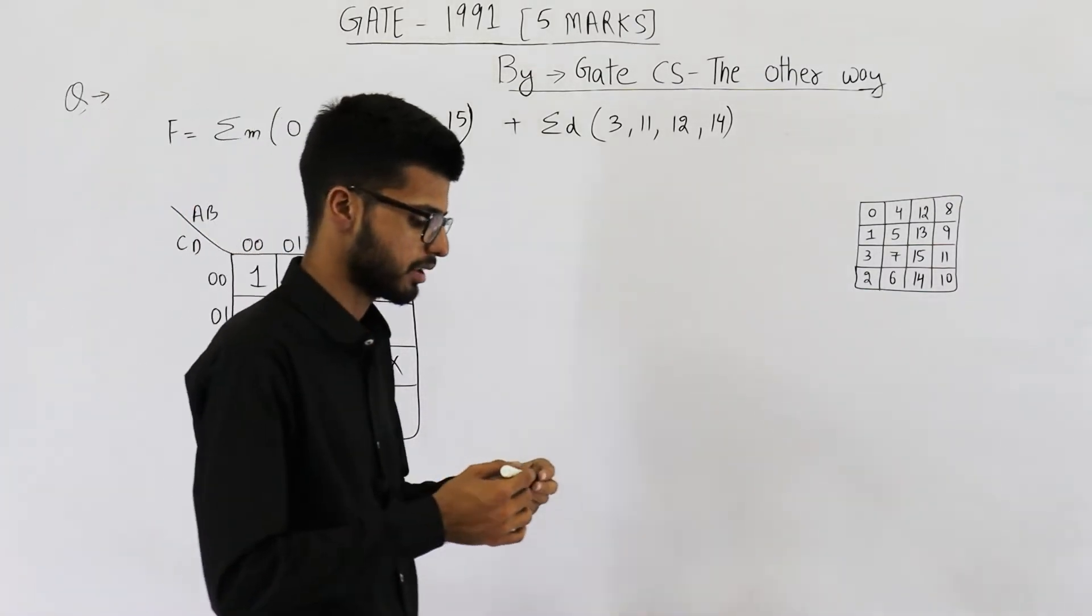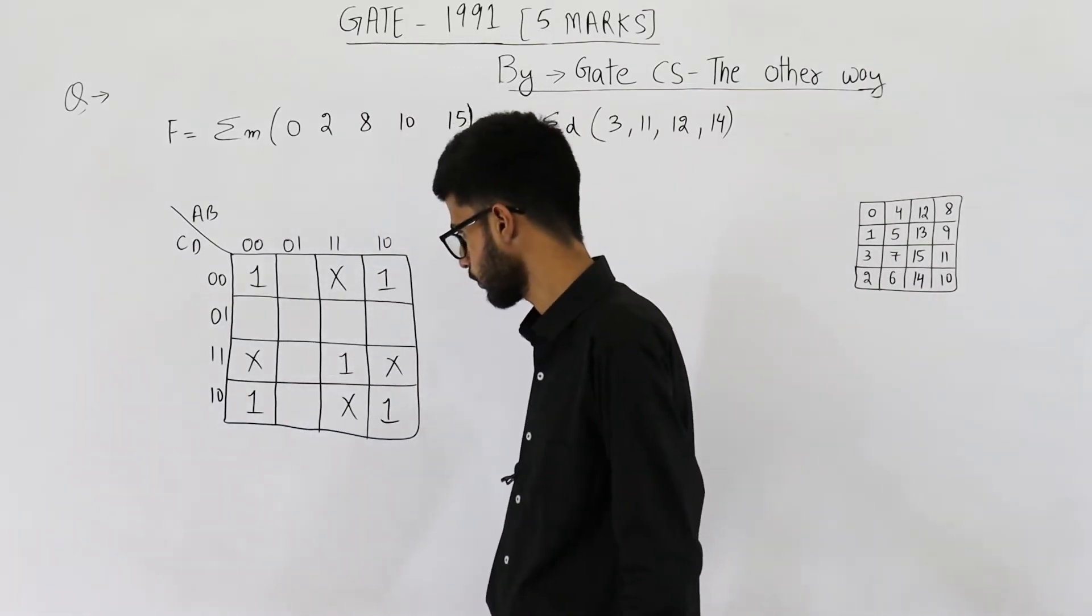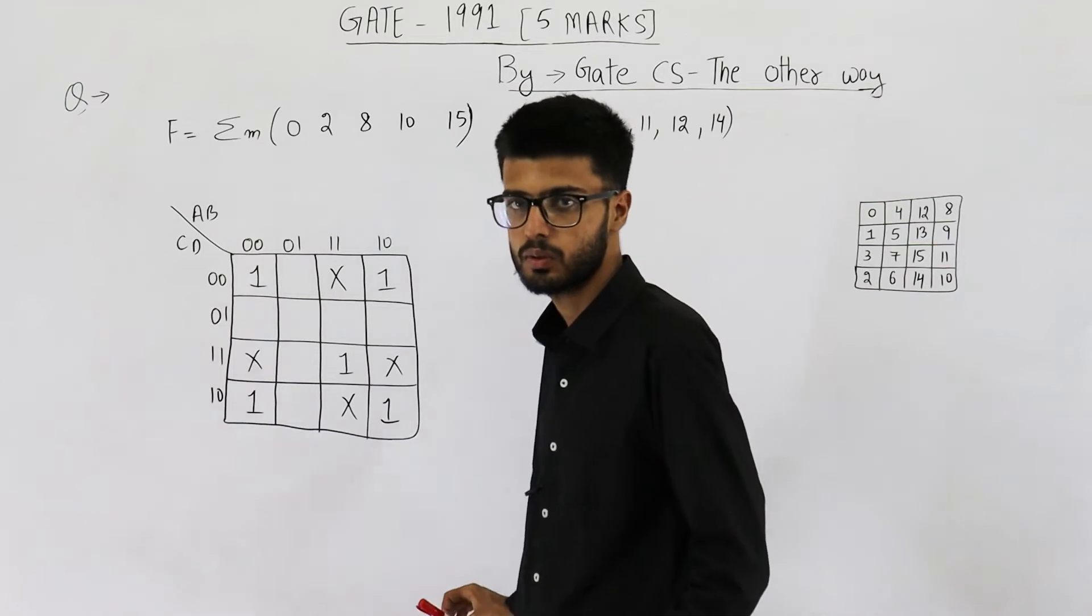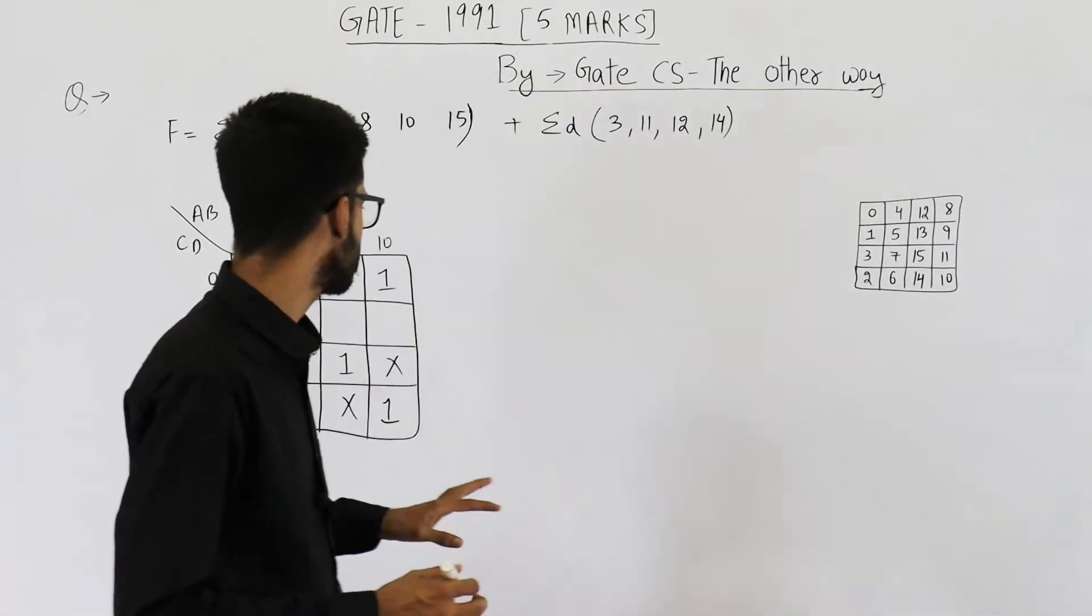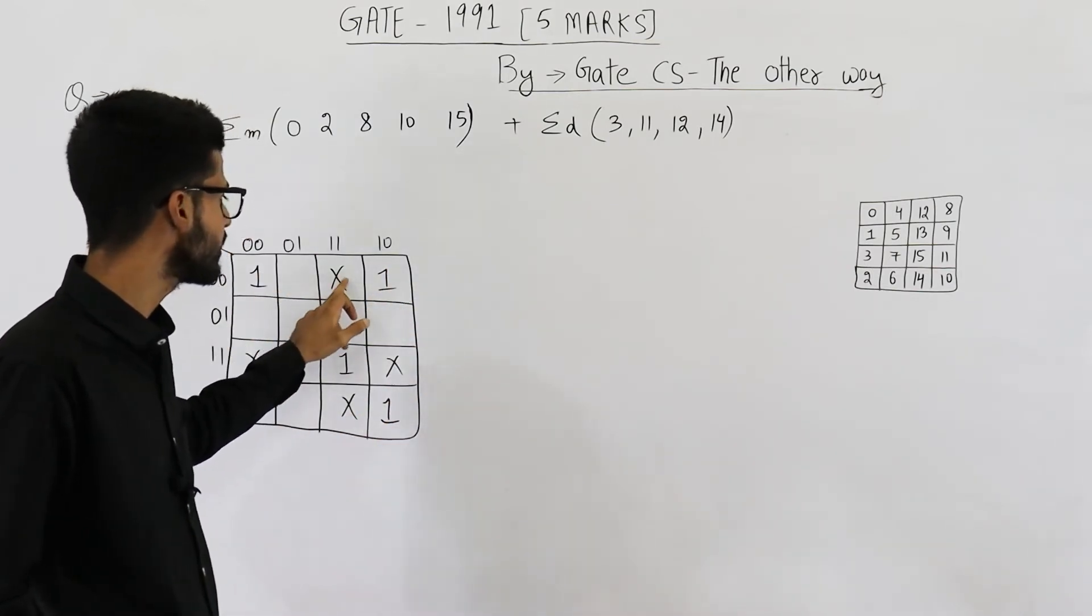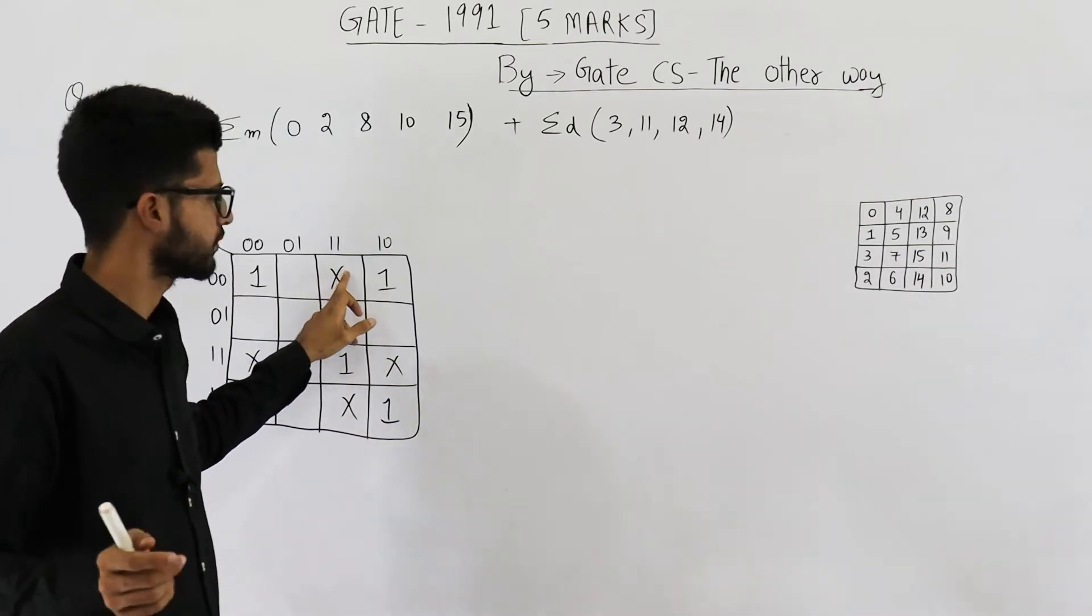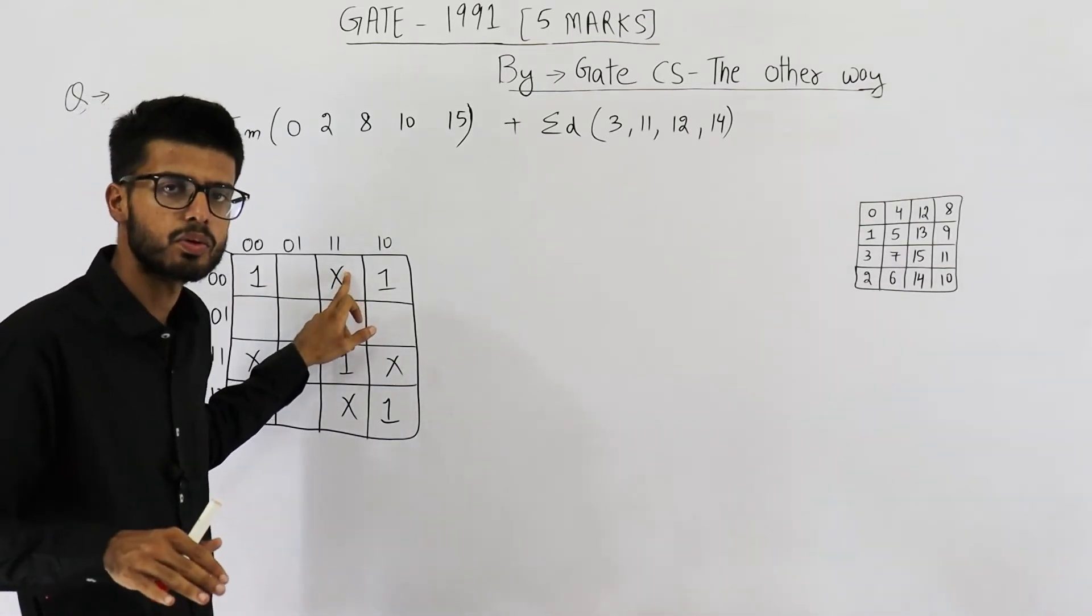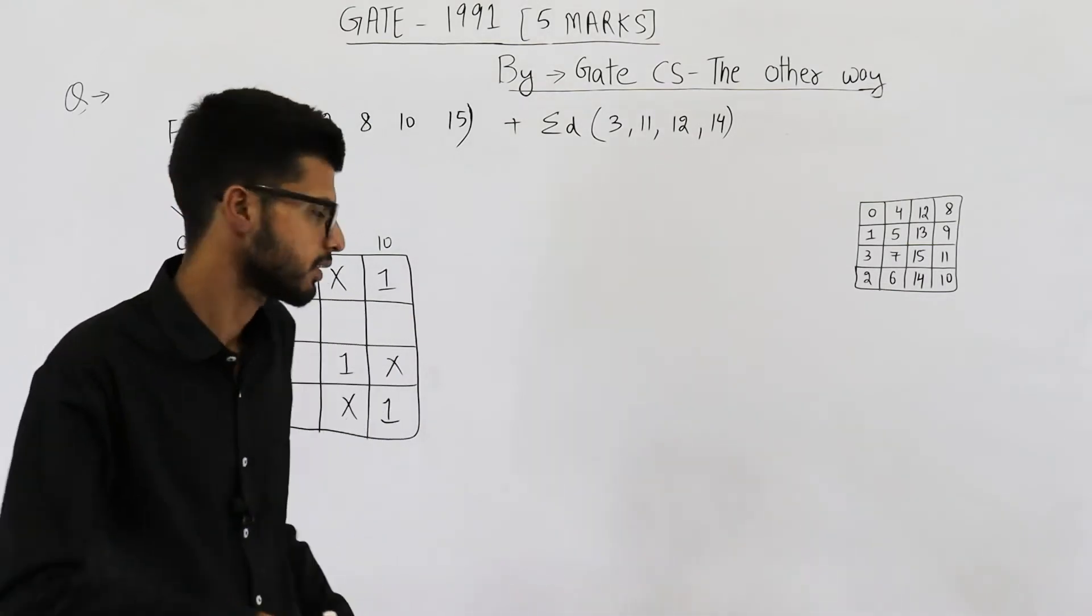Let's draw groups and minimize it. Now the thing is, whenever you're given don't cares, don't try to include them. If they need to be included, that's okay. But our main motive is to include all the ones. These must not be given any priority. But if they are to be included in some group and that leads to increasing the size of group, then you just include them.